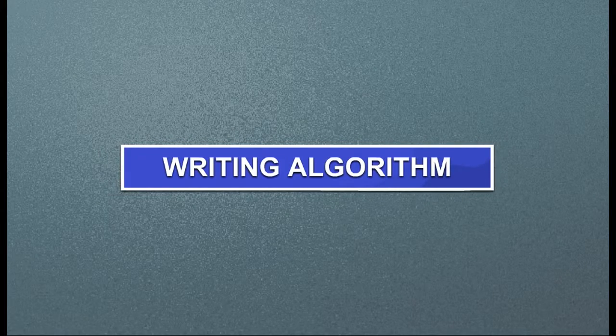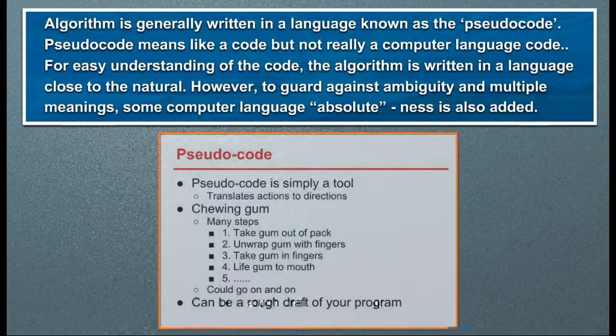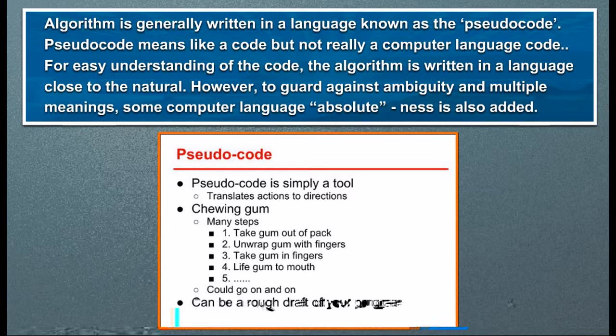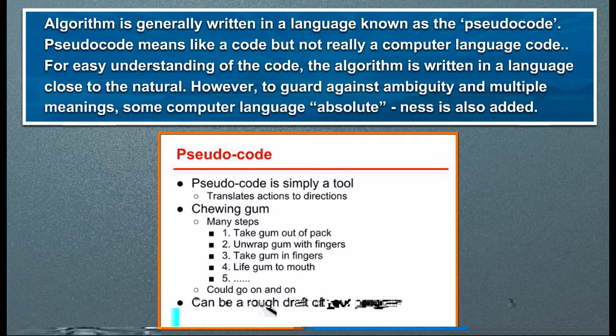An algorithm is generally written in a language known as pseudocode. Pseudocode means like a code but not really a computer language code. For easy understanding of the code, the algorithm is written in a language close to the natural.